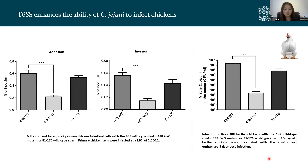We also performed chick infection studies infecting 15-day-old broiler chickens using the same three strains. At three days post-infection, we looked at the number of viable bacteria in the cecum, and the number of 4A8 wild type strain present was higher than the TssD mutant. These results combined indicate that the type 6 is important in enhancing the ability of C. jejuni to colonize chickens.